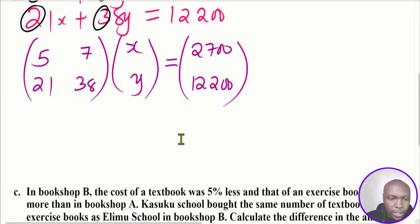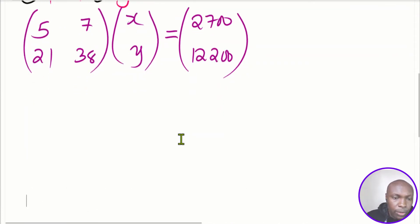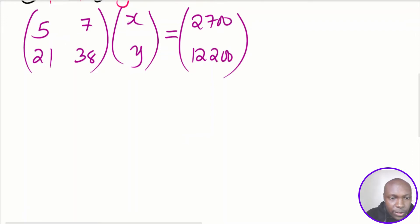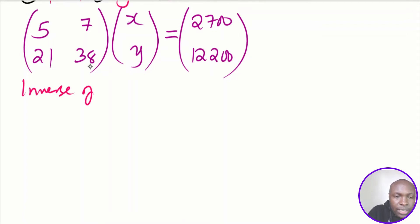To solve using the matrix method, we begin by finding the inverse of the matrix [5, 7; 21, 38]. To get the inverse, we start by calculating the determinant of that matrix.